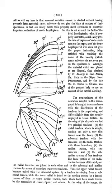Chalaza (seta): external spine that has a single point. Etymology: Greek chalasa, a tubercle. Cf. Scolus, which has multiple points.